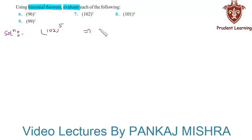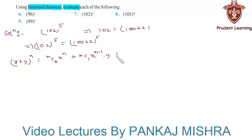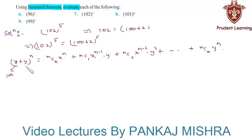Next we have to evaluate 102 raised to the power of 5. Here we can write 102 as 100 plus 2, so 102⁵ equals (100 plus 2) whole raised to the power of 5. Using the Binomial Theorem, the expansion for (x plus y)ⁿ equals nC0·xⁿ plus nC1·x^(n−1)·y plus nC2·x^(n−2)·y² and so on up to nCn·yⁿ. We substitute x equals 100, y equals 2, and n equals 5.